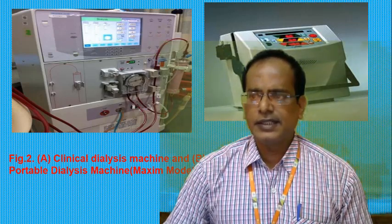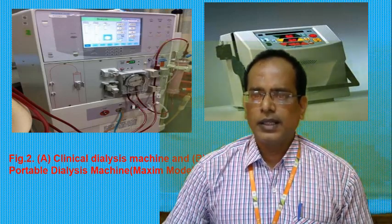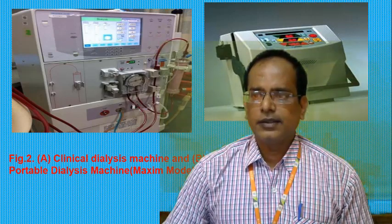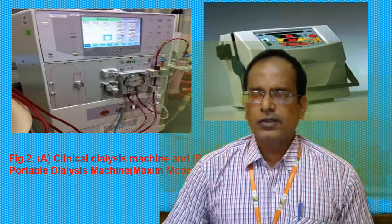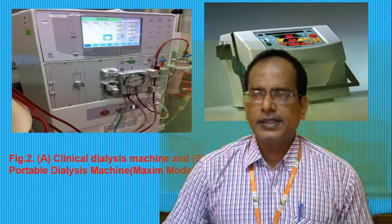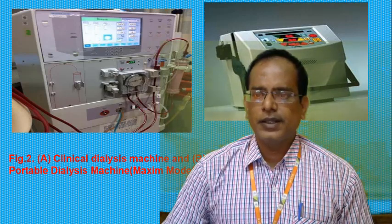The principle of hemodialysis is the same as dialysis in our kidney — it involves diffusion of solutes across a semi-permeable membrane. Hemodialysis utilizes a counter-current flow method where the dialysate flows in the opposite direction to the blood flow in the extracorporeal circuit. This counter-current flow maintains the concentration gradient across the membrane at a maximum, which increases the efficiency of dialysis.